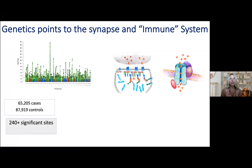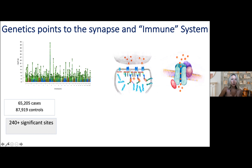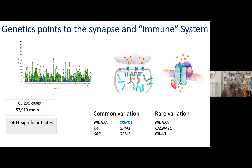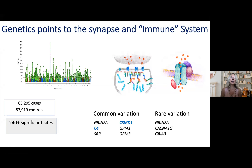This is where genetics over the last decade has been really powerful. Over 240 significant sites have been identified in case-control studies of schizophrenia. A very strong signal remains at the MHC locus on chromosome six, and emerging genetics are increasingly implicating the synapse — genes and molecules involved in synaptic development and function — as well as genes traditionally associated with the innate immune system, particularly the classical complement cascade.